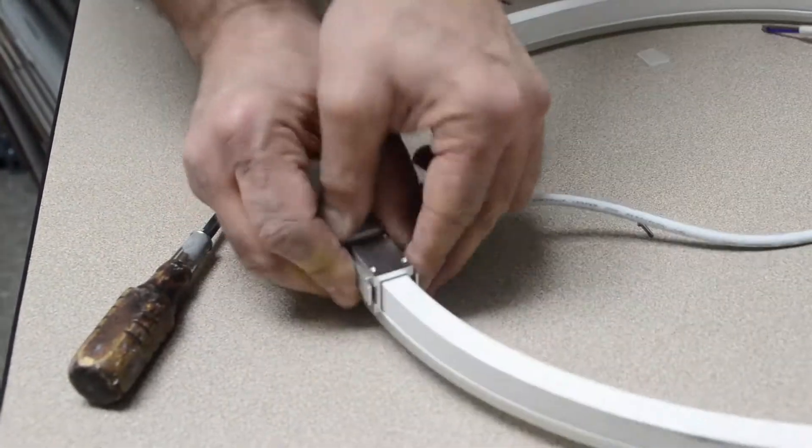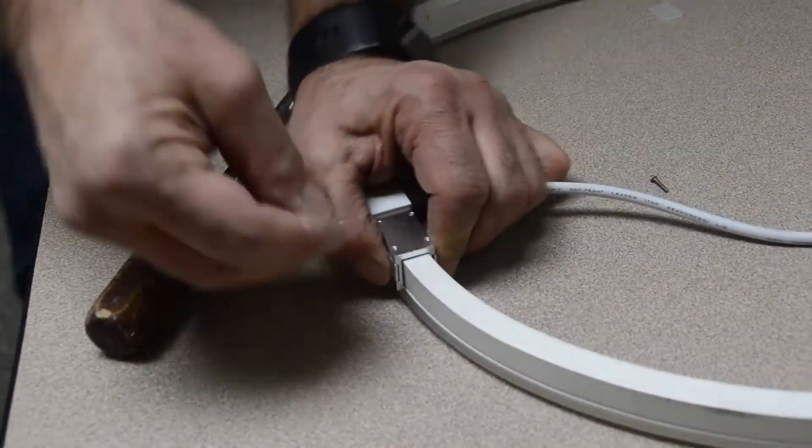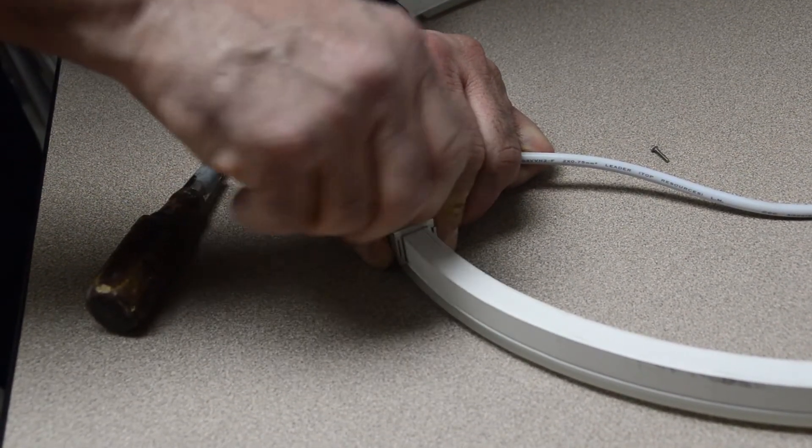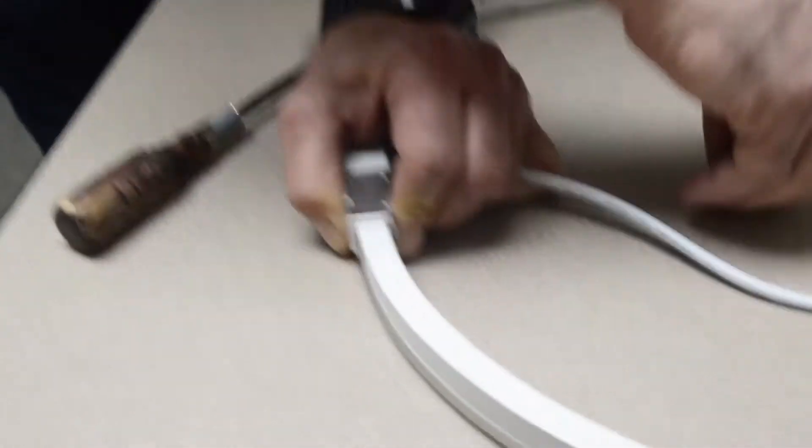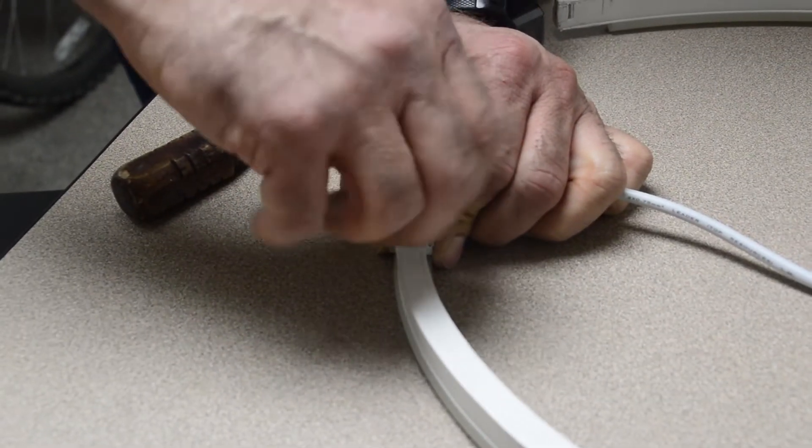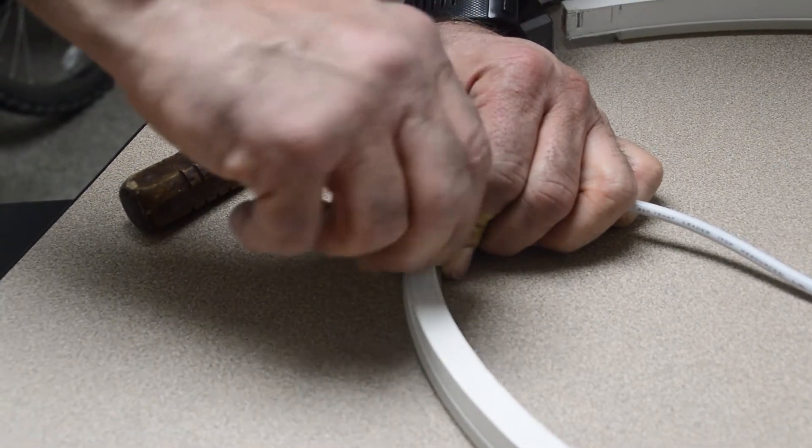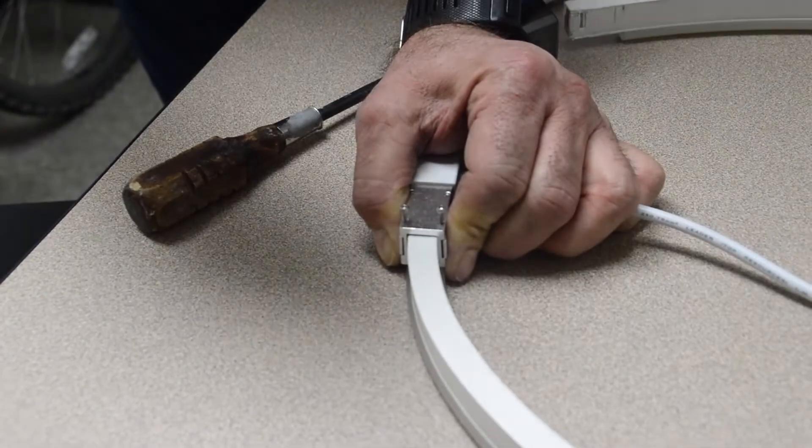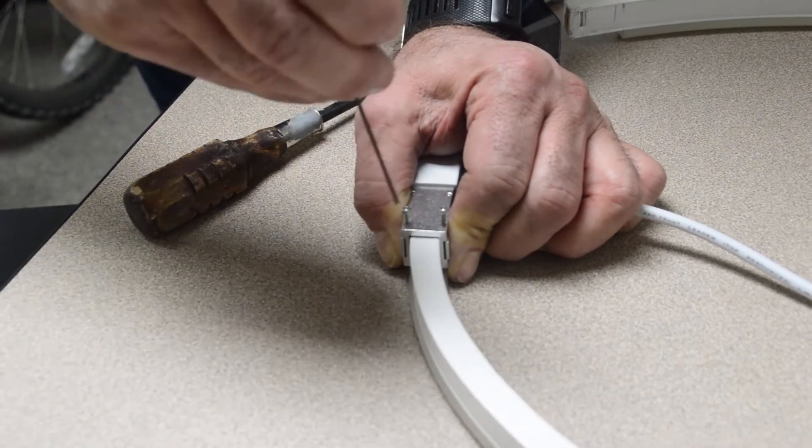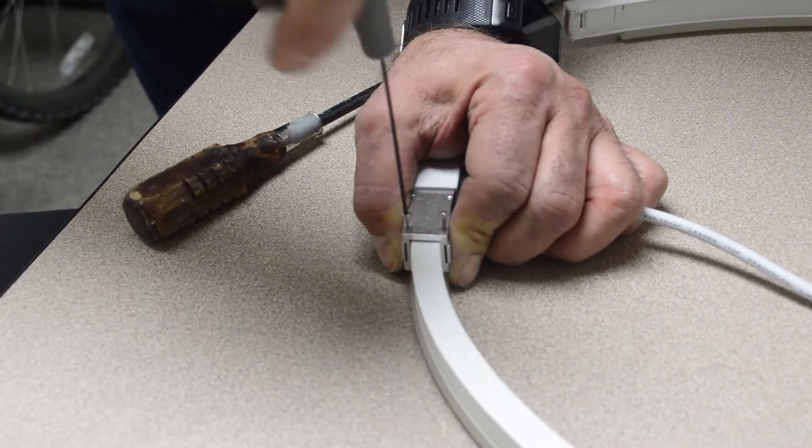Then flip the product over and install your two screws on the two levers. You have to squeeze the levers tight and tighten the screws. A small 1.5 millimeter Allen wrench will work.